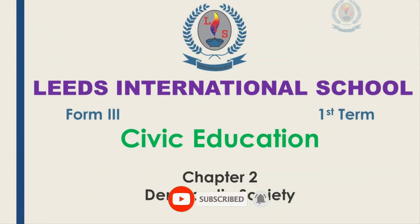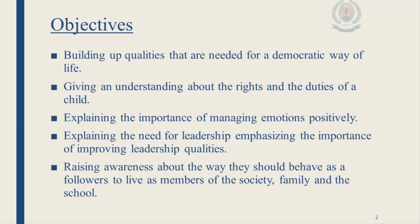Form 3 Civic Education, first term. According to your syllabus, the second chapter is Democratic Society, from page 32 to 50. Democracy is a form of administration as well as a way of living. A democratic society is a self-disciplinary and consensual society in which people act in cooperation with one another based on freedom and equality, and being respectful to the opinions of the majority. To ensure the existence of such a society, it is quite essential to develop democratic qualities in the citizens.